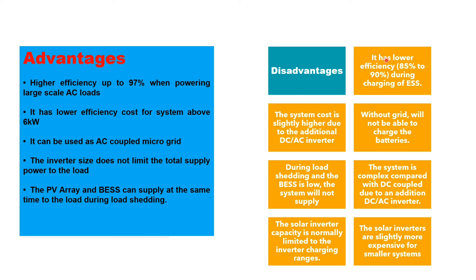Disadvantages of an AC coupled system: it has lower efficiency — 85% to 95% — during charging of the battery energy storage system; the system cost is slightly higher due to the additional DC-AC inverter; without the grid, you will not be able to charge the battery; during load shedding, if the battery energy storage system is low, the system will not supply; the system is more complex compared with DC coupled due to the additional DC-AC inverter; and the solar inverter capacity is normally limited to the inverter charging ranges.